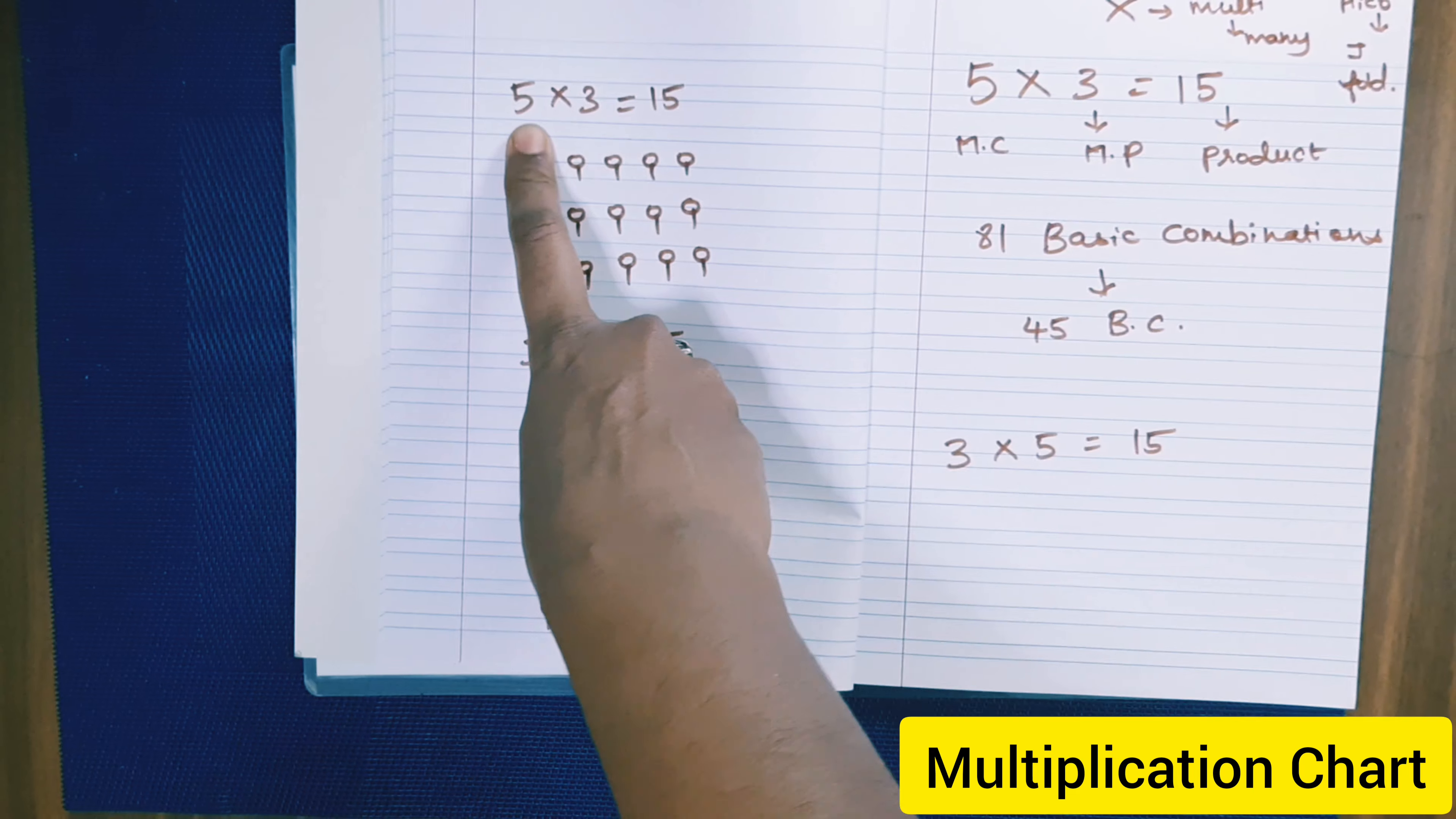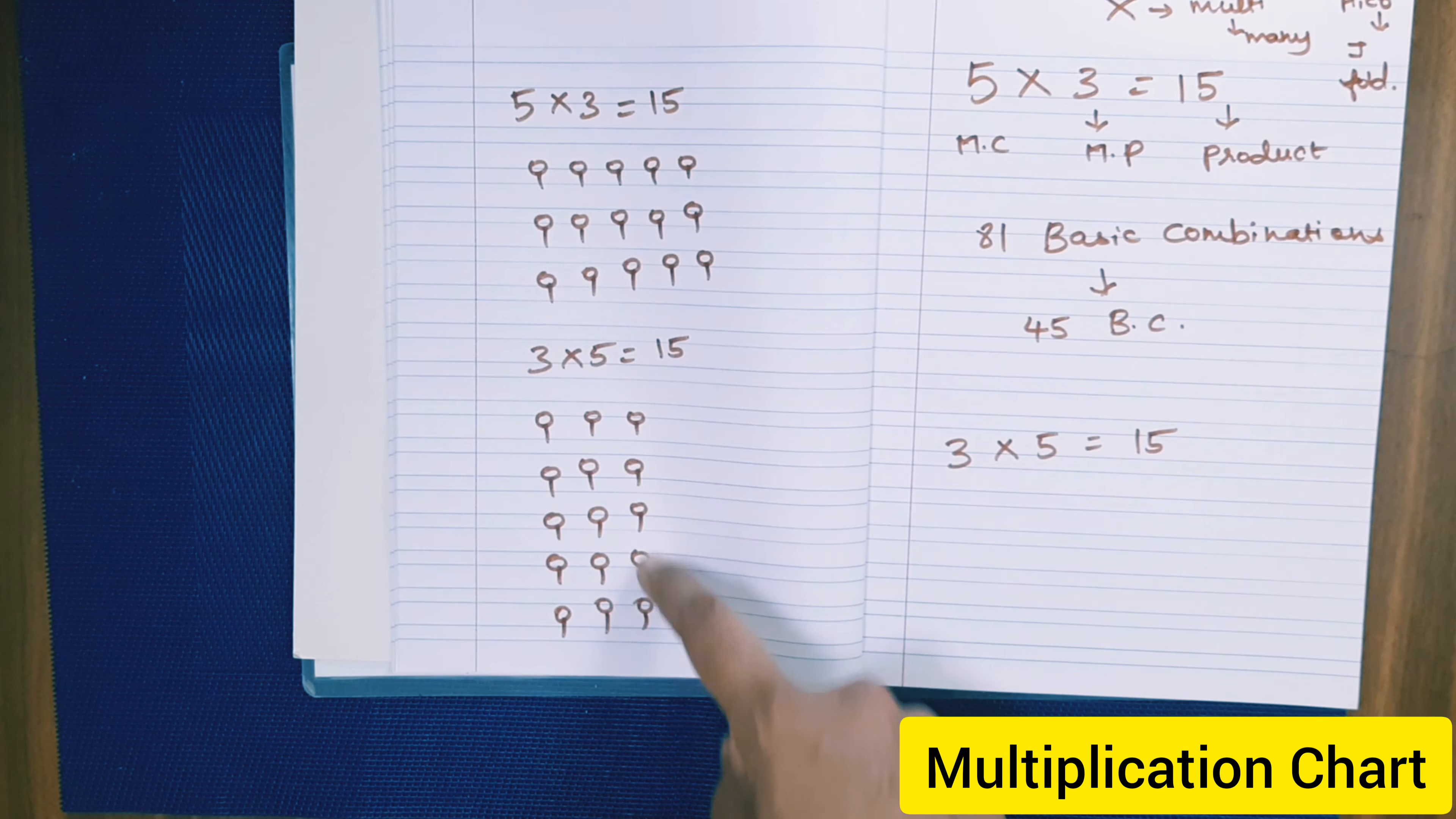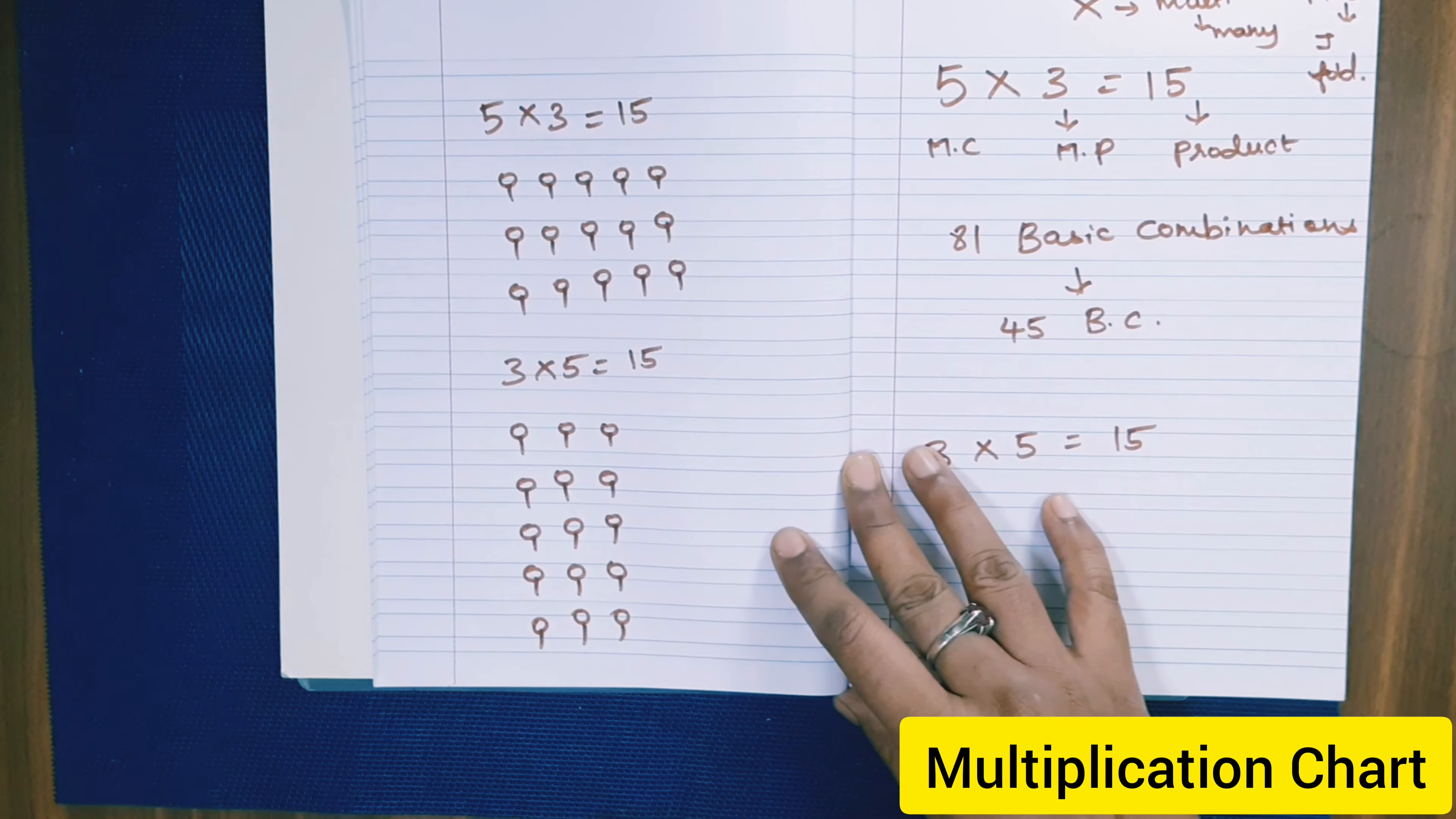So the multiplicand 5 is taken 3 times and the answer is 15. Here 3 multiplied by 5 is 15. We have taken only 3 lollipops at a time, and how many times we have taken? 5 times. So even though the answer is same, there is a huge difference between 5 multiplied by 3 and 3 multiplied by 5 when it comes to the quantity.